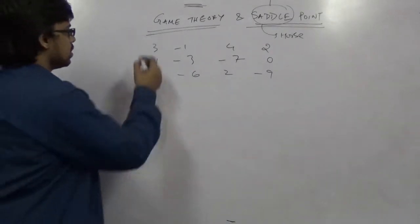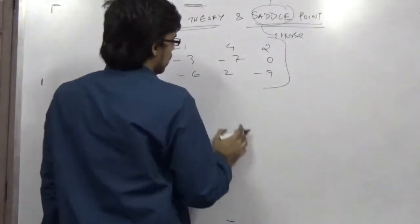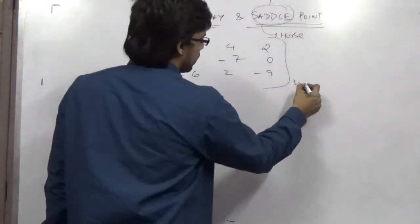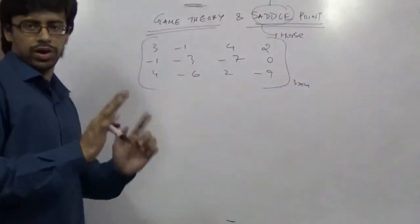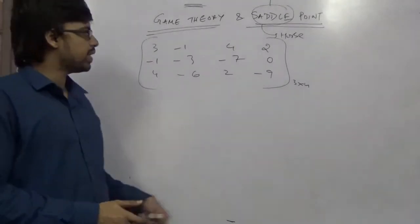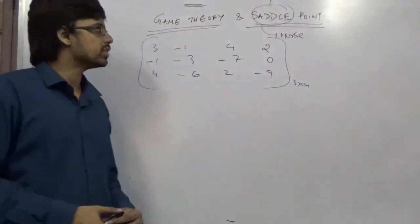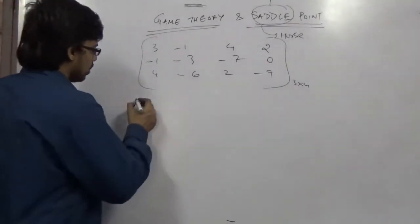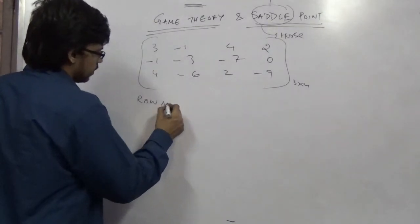So this is your entire matrix. So how many rows you can see? 3 rows, 4 columns. It's a 3 into 4 matrix. So there must be a saddle point. For a saddle point, the matrix need to be a square matrix. So this is called, saddle point is called, row minima, column maximum method. Row minima.